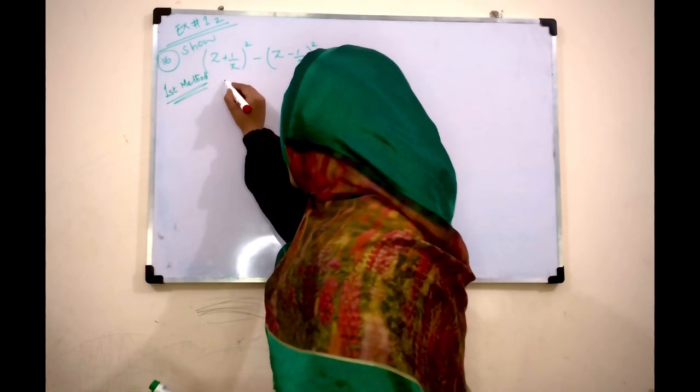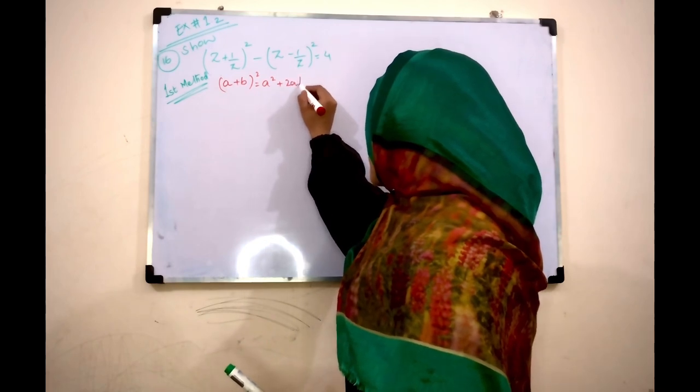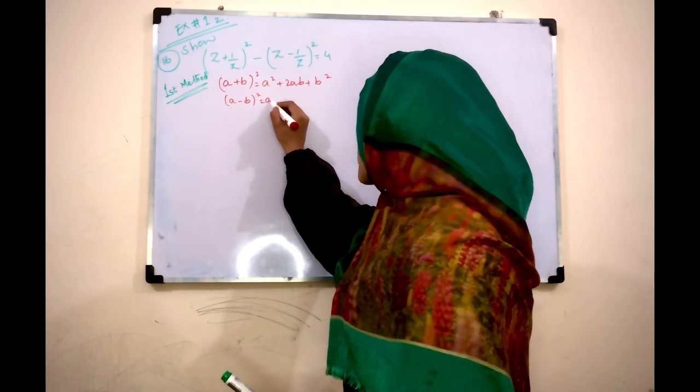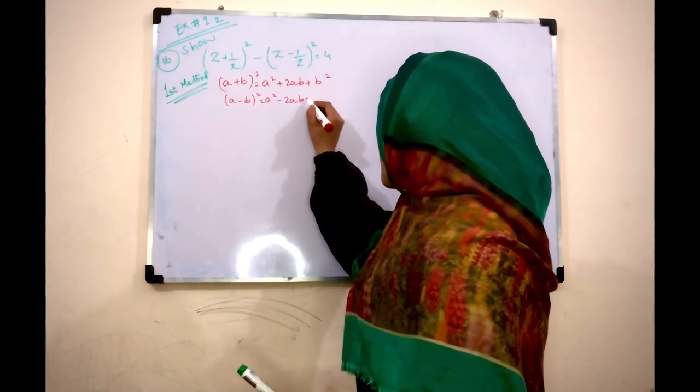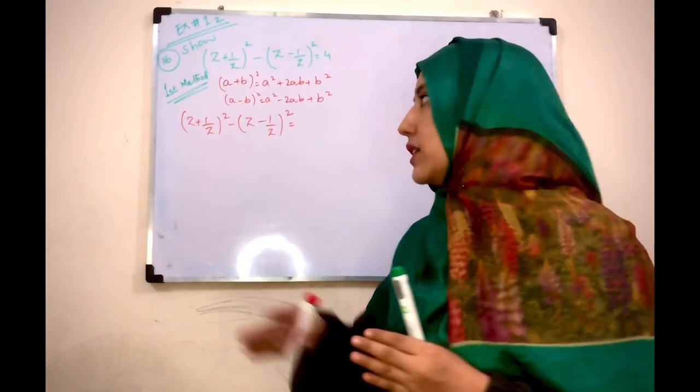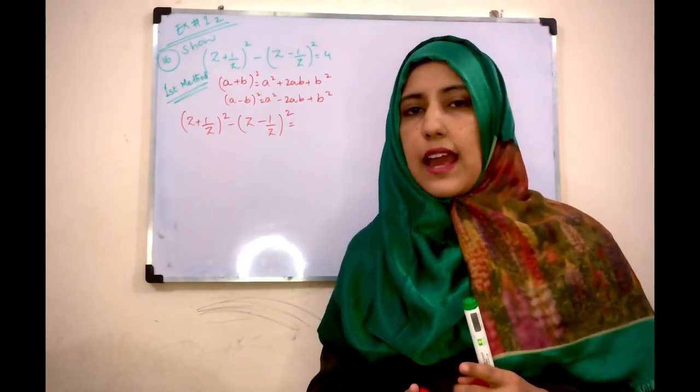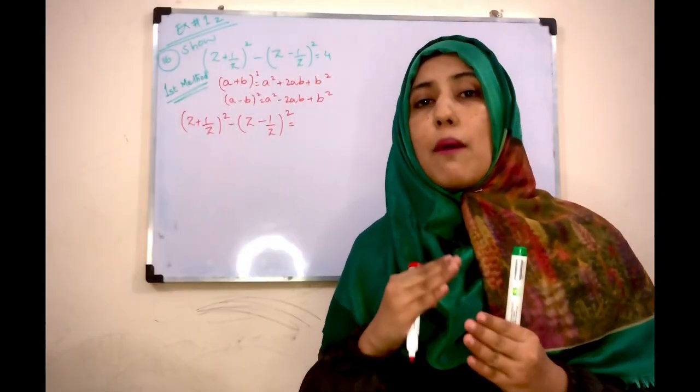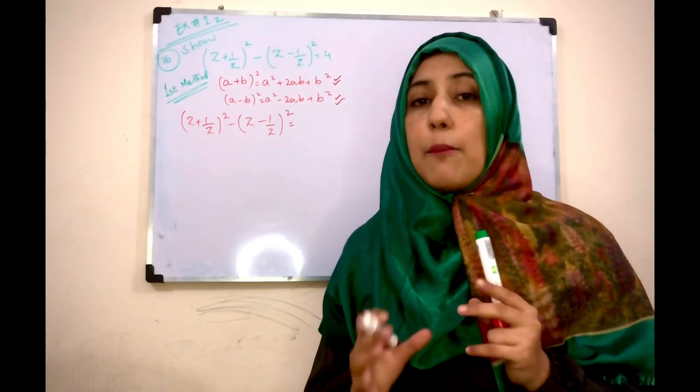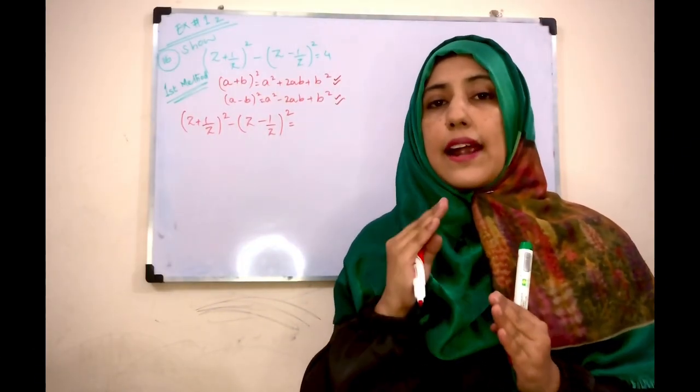So first, the identity is (a + b)² equals a² plus 2ab plus b². And minus identity is (a - b)² equals a² minus 2ab plus b². Students mostly wrongly make the mistake that they just write the expression and apply the identity. But if you want full marks, you must have to write the identity.